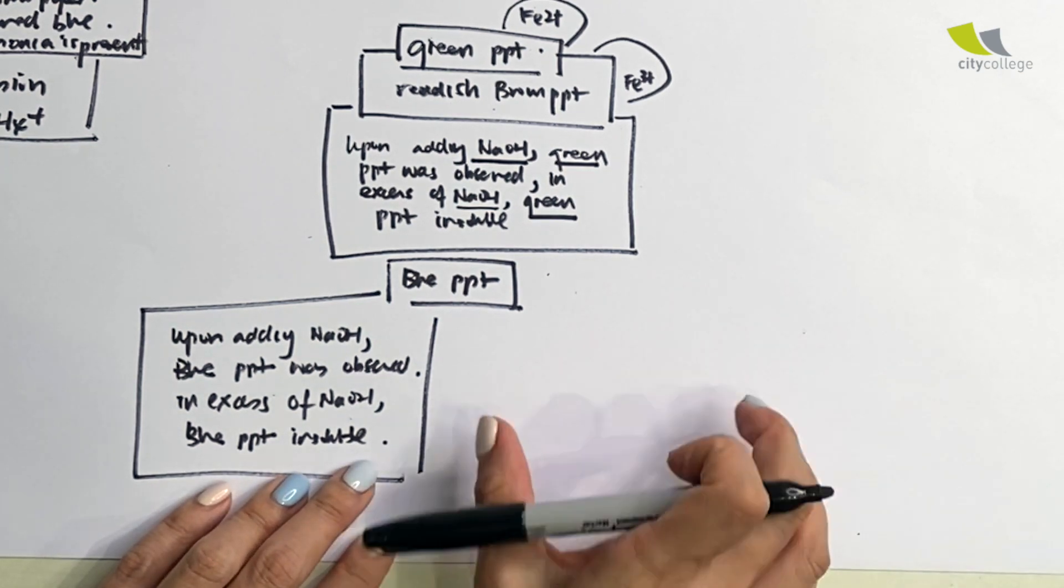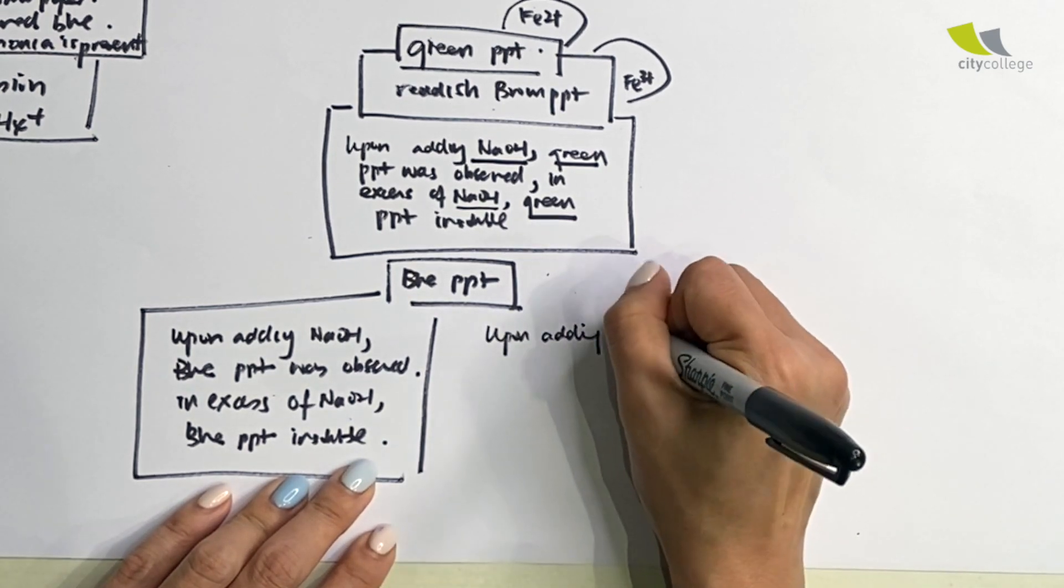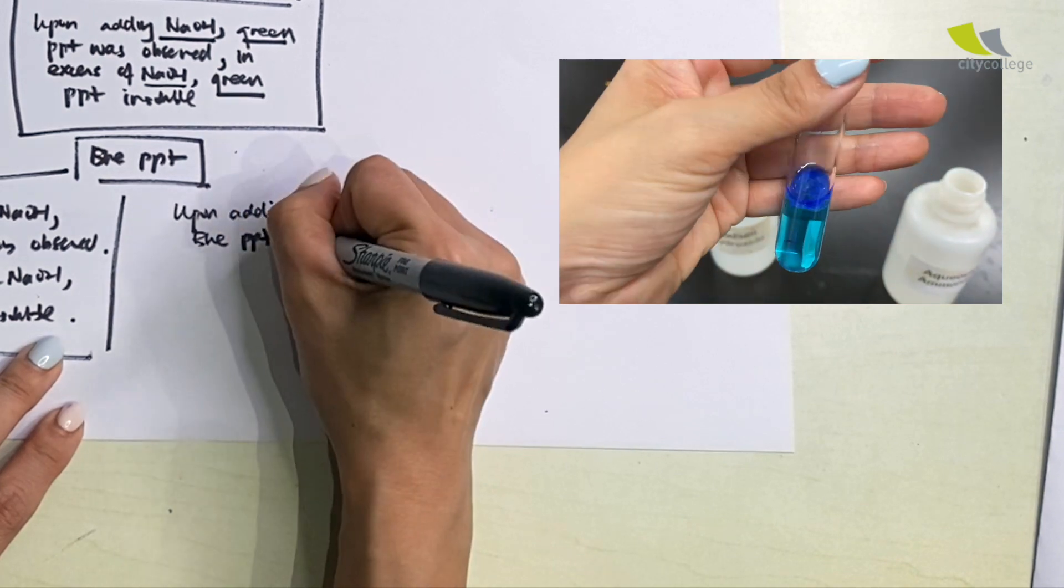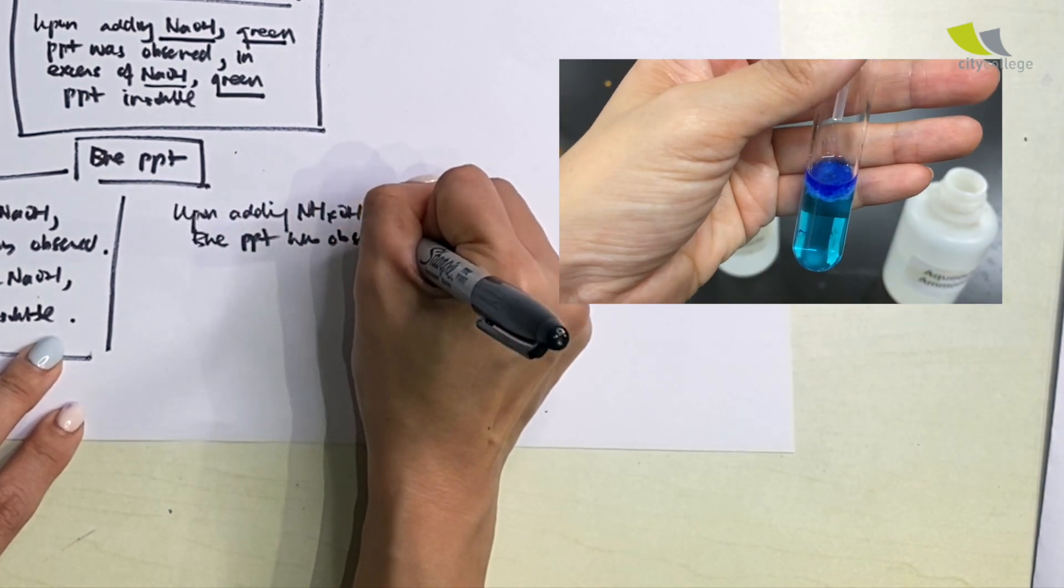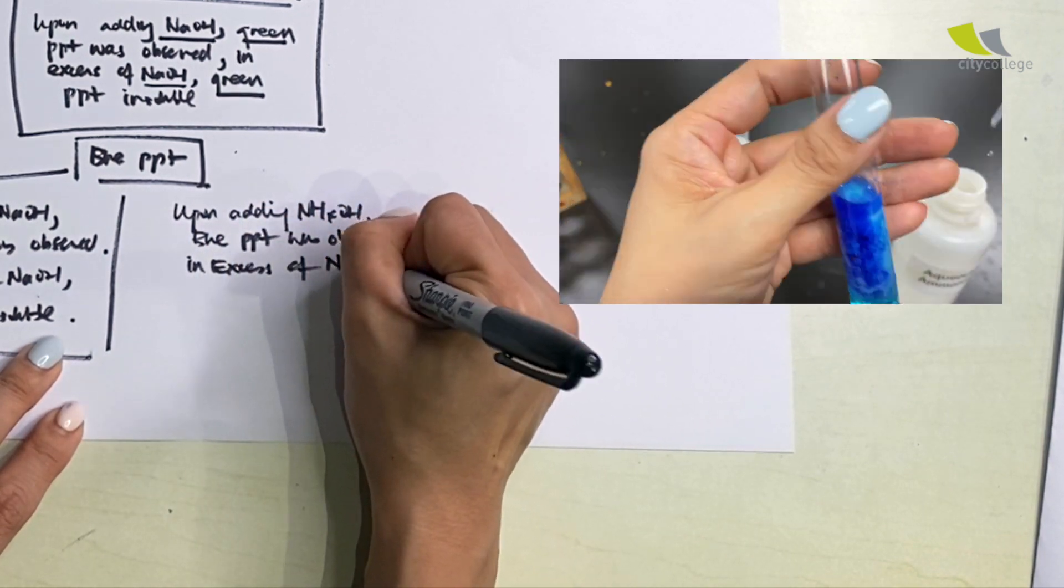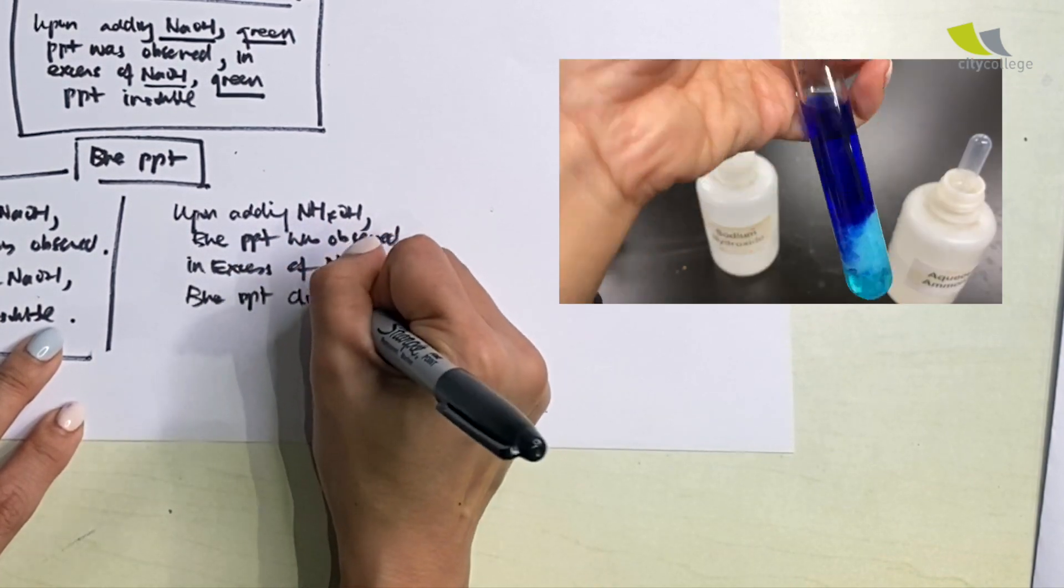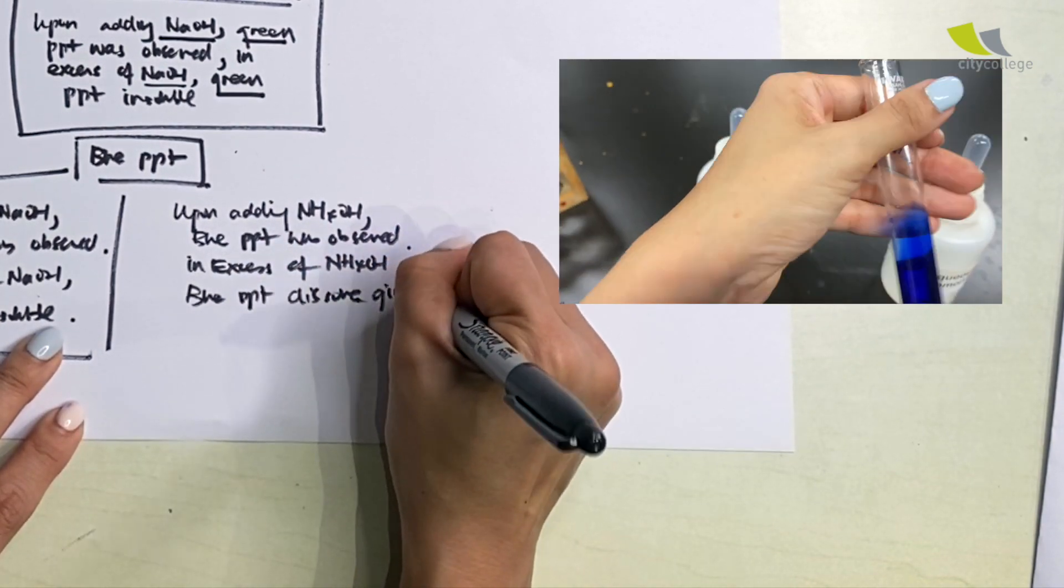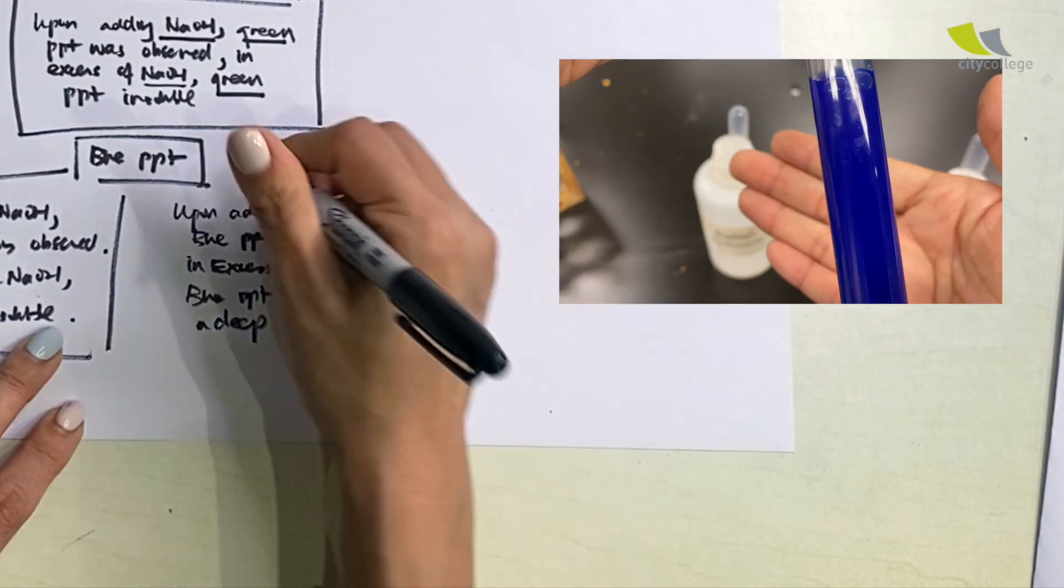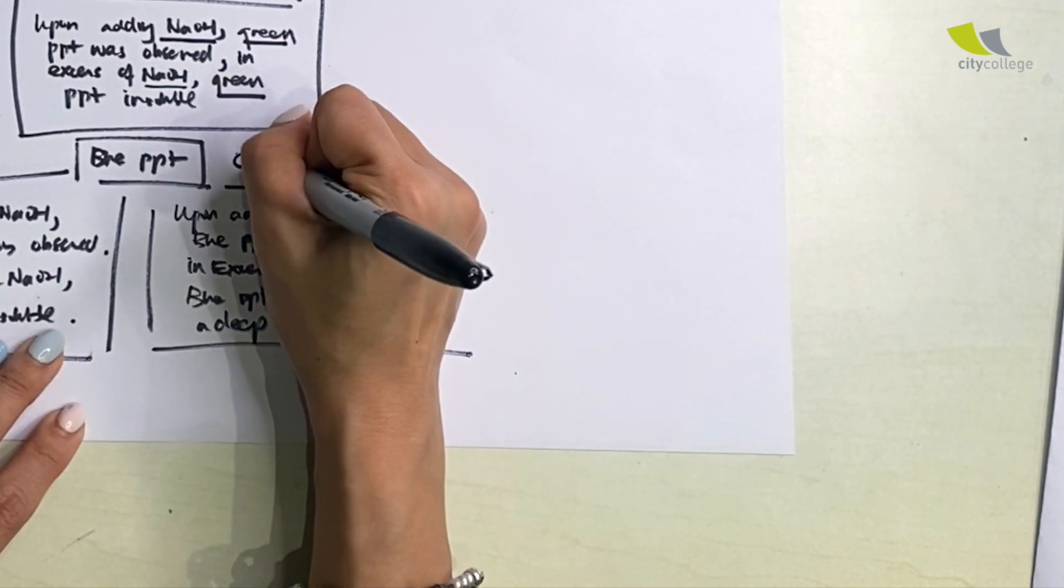However, for this portion here, you will see a bit of change. Upon adding NH4OH, blue precipitate was observed. In excess of NH4OH, blue precipitate dissolved, giving a deep blue solution. This is none other than Cu2+.